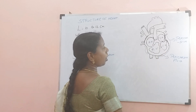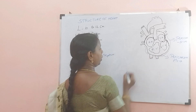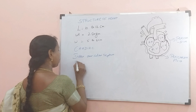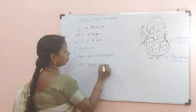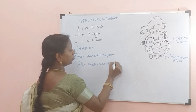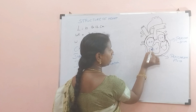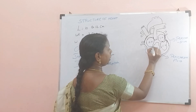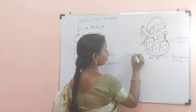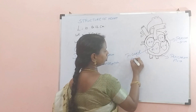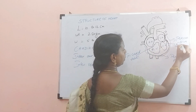The auricle chamber is above, and beneath that we have the ventricle — right ventricle and left ventricle. They are separated by the interventricular septum. The right auricle and right ventricle are separated by the tricuspid valve. Similarly, on the left side it is the bicuspid valve.